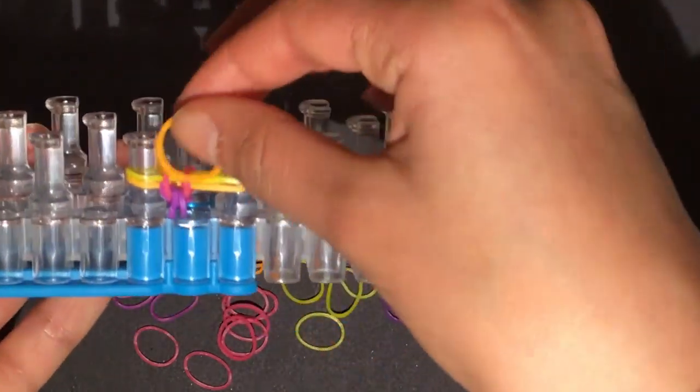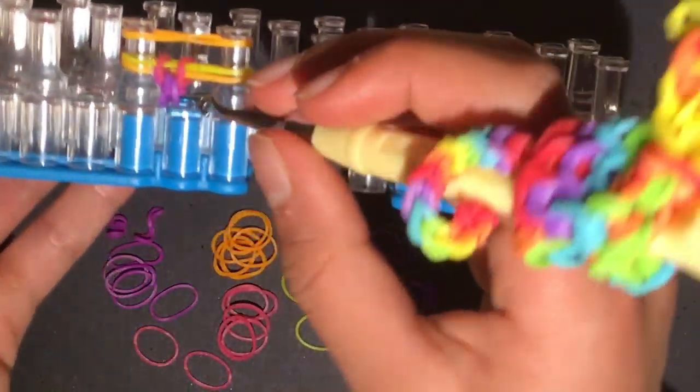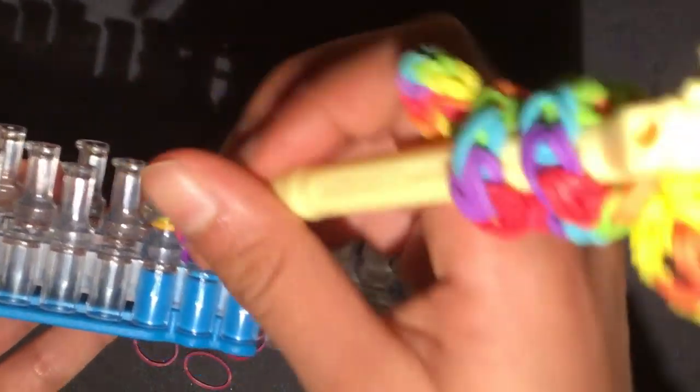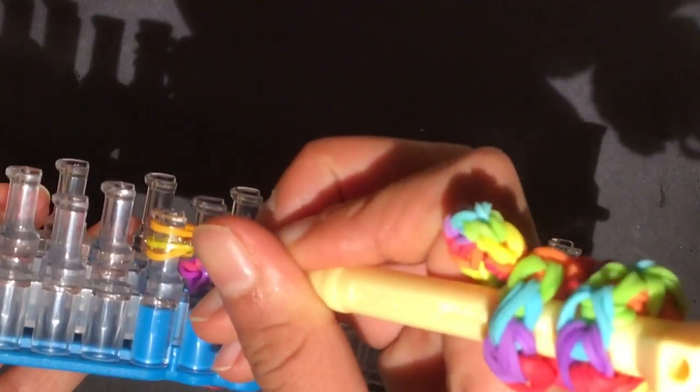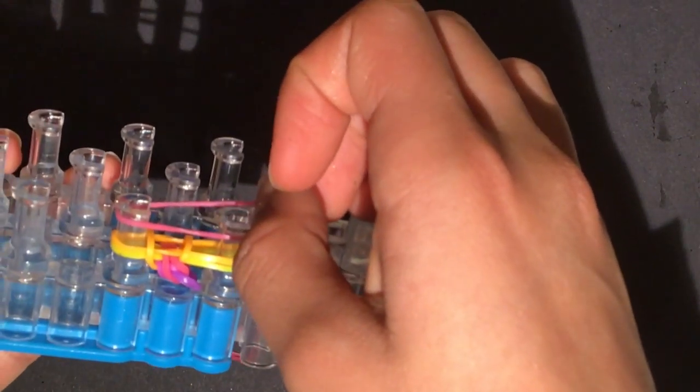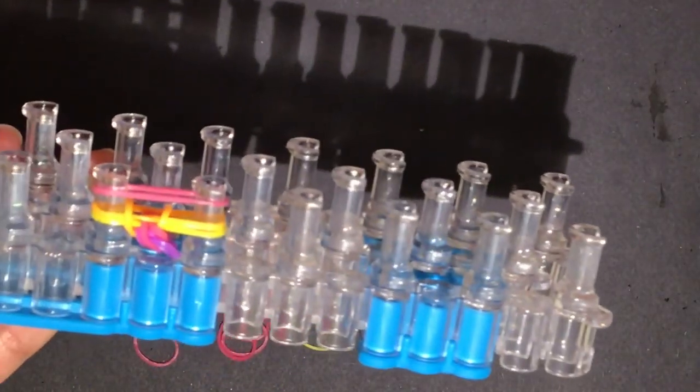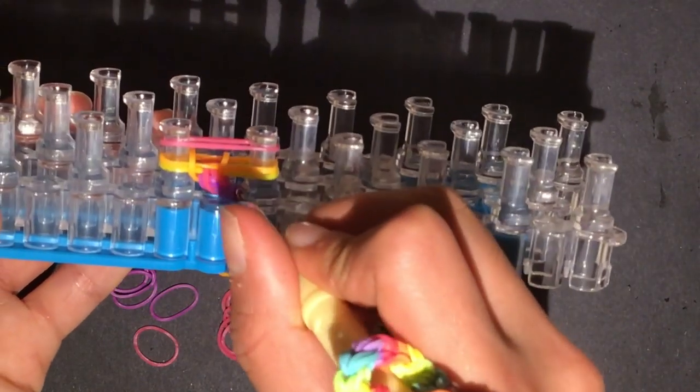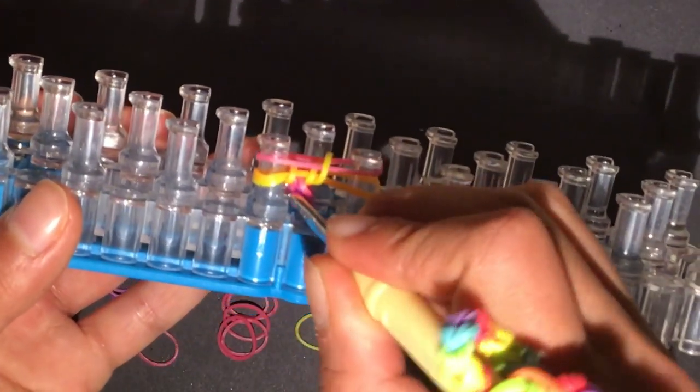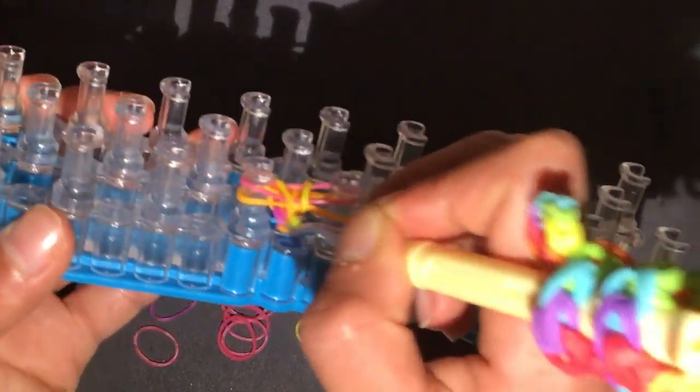Next I'm gonna take my next color. Sorry cat, you can't come in here right now. And then I'm gonna take my bottom band and hook it over like that. So it looks like this. So now I'm gonna take my next color, put it on, and then I'm gonna grab the bottom band, put it over, then I'm gonna grab this bottom band and put it over.